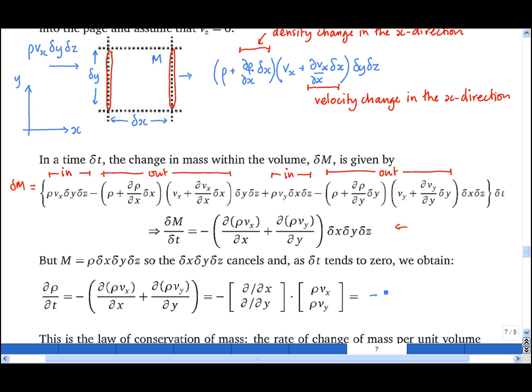This can be written concisely as minus del dot, open brackets, density times velocity, close brackets.